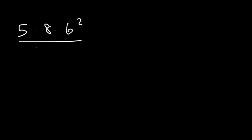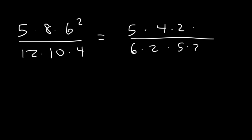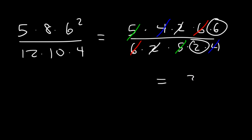Here's one more: 5 times 8 times 6 squared, all divided by 12 times 10 times 4. Let's break the numbers down: 8 is 4 times 2, 12 is 6 times 2, 10 is 5 times 2, and 6 squared is 6 times 6. Now we can cancel: cancel a 6, cancel a 4, cancel a 5, and cancel a 2. We're left with 6 divided by 2, which is 3. That's the answer.